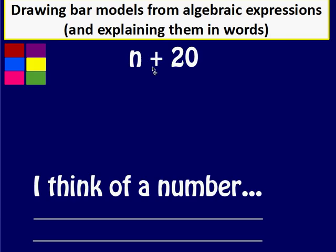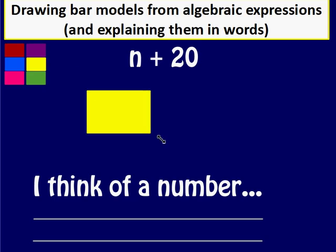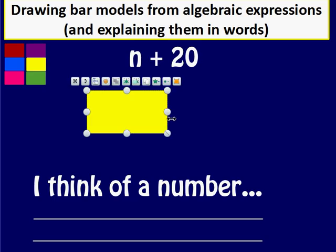Okay, here's our algebraic expression, n plus 20. We're going to try drawing a bar model to start with. Let's choose yellow and okay, this is looking like a bar, very good.